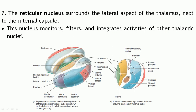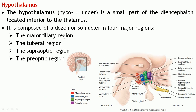The seventh is the reticular nucleus, which surrounds the lateral aspect of the thalamus. This particular nucleus monitors, filters, and integrates the activities of the other thalamic nuclei. That concludes the discussion of the thalamus and all its nuclei, which mainly act as relay stations.